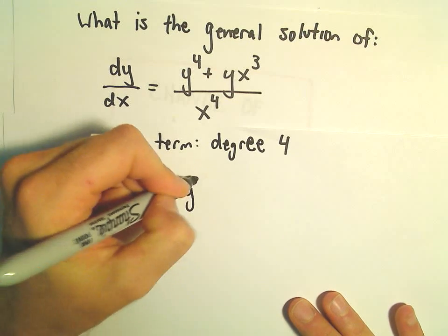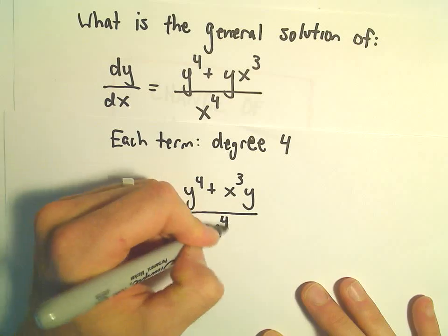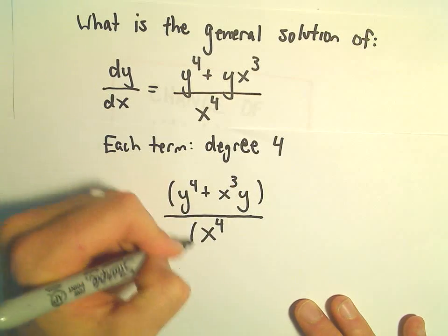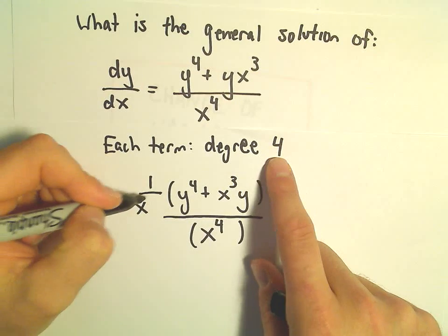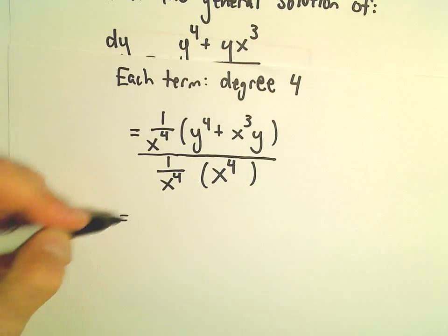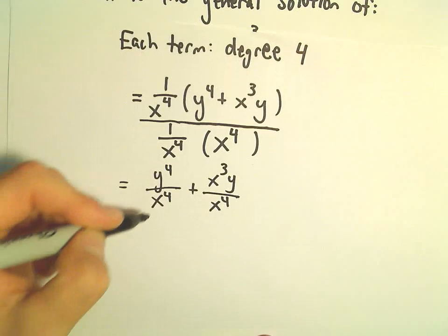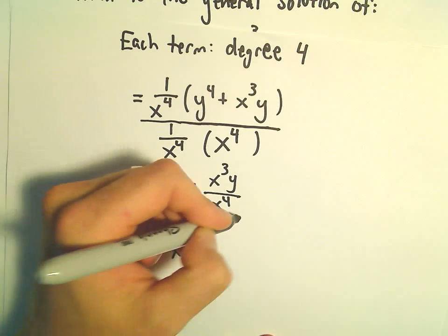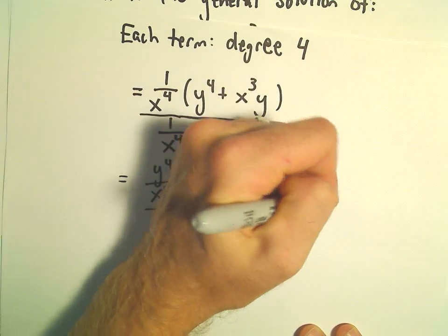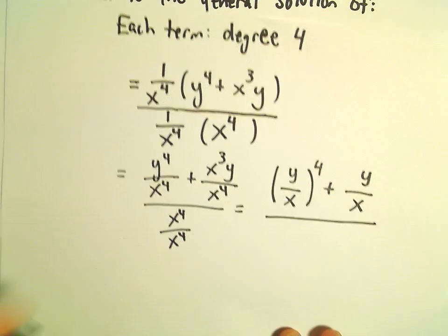To solve this, we'll take our equation and multiply numerator and denominator by 1 over x to the fourth. That leaves us with y to the fourth over x to the fourth, plus x cubed times y over x to the fourth, over x to the fourth over x to the fourth. We can simplify: y to the fourth over x to the fourth becomes y over x all raised to the fourth power. x cubed over x to the fourth leaves an x in the denominator, and x to the fourth over x to the fourth is just 1.